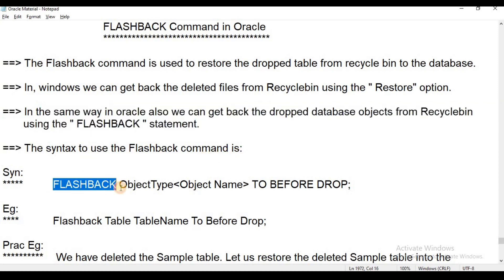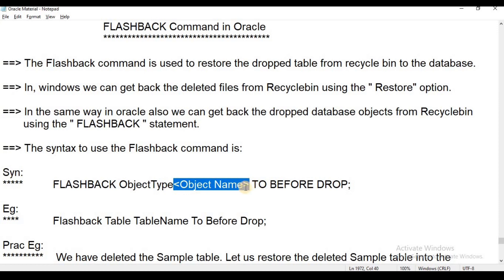The syntax for Flashback is: FLASHBACK, then the object type — that is TABLE, VIEW, or other object type — then the object name. Then you have TO BEFORE DROP. For example: FLASHBACK TABLE table_name TO BEFORE DROP.